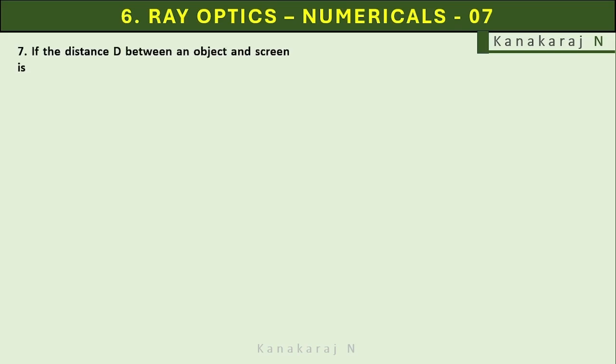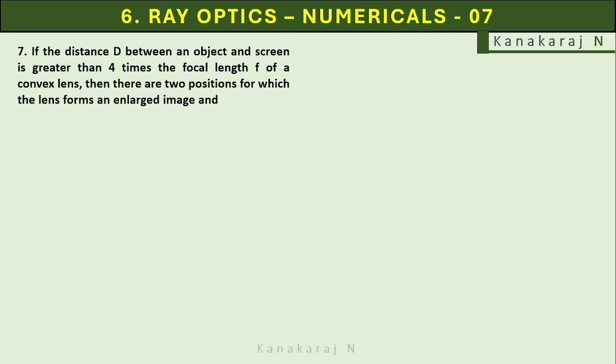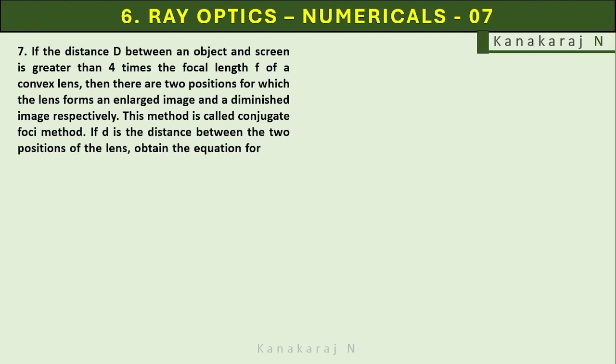If the distance D between an object and the screen is greater than 4 times the focal length f of a convex lens, then there are two positions for which the lens forms an enlarged image and a diminished image respectively. This method is called conjugate foci method. If d is the distance between the two positions of the lens, obtain the equation for focal length of a convex lens.